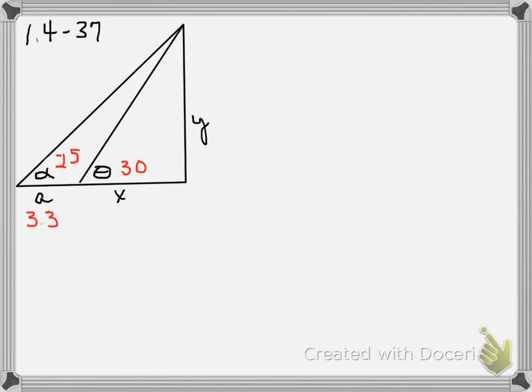The height is represented by y. Someone has measured from an angle of 30 degrees to the top of the mountain. We don't know that distance because you can't measure through the base of the mountain. Then they've moved out 3.3 meters and measured another angle at 25 degrees to the top of the mountain.